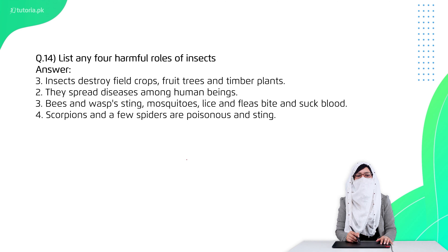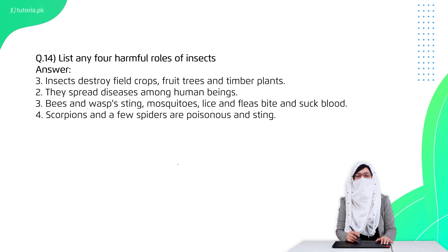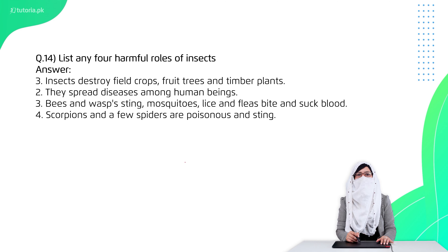Question 14 is: list any four harmful roles of insects. First, they destroy the environment. Second, they destroy crops. Third, they act as parasites on humans or animals, and some are poisonous. Fourth, they spread disease in humans by acting as a vector.